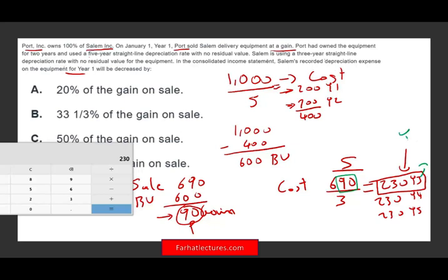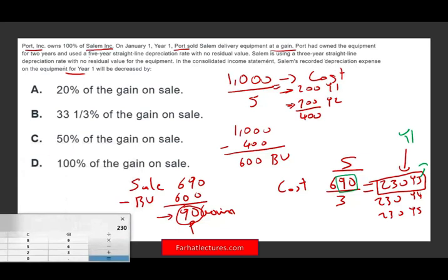So that additional $90 would increase our depreciation expense by $30 at Salem company. Now, this is year three, but for Salem, it's year one. This is what we're being asked about. So what's going to happen is we have to reduce our depreciation by one third of the gain. Why one third of the gain? We need to reduce our depreciation by $30 for year one out of $90.